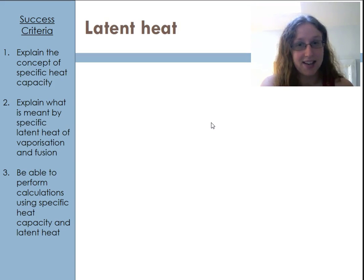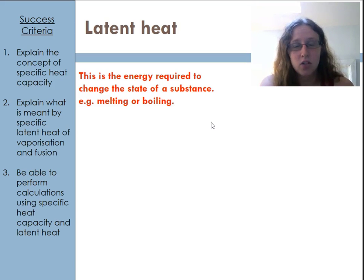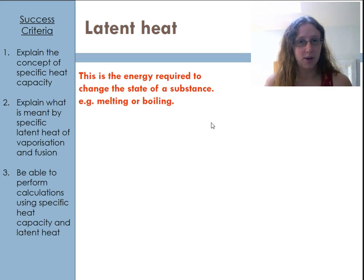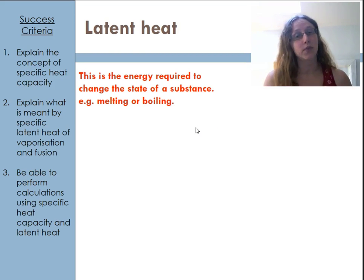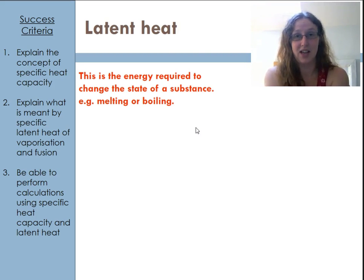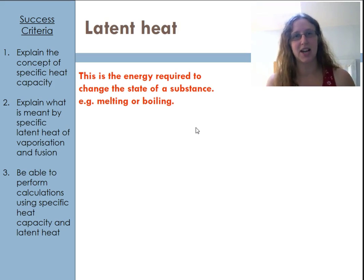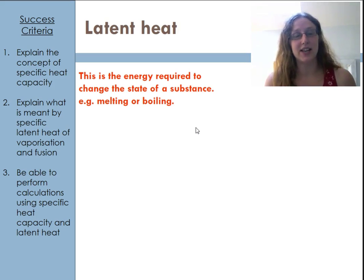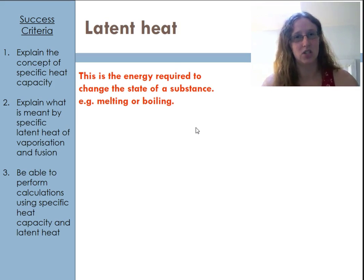Next we need to talk about latent heat. Latent heat relates to the energy required for changing state. When I discussed specific heat capacity, I said it only applies to changes in temperature. We have a completely different value when we talk about changing state, because we can only do one of these things at a time — when thermal energy is put into an object, it can either change the temperature or change the state; it cannot do both simultaneously.